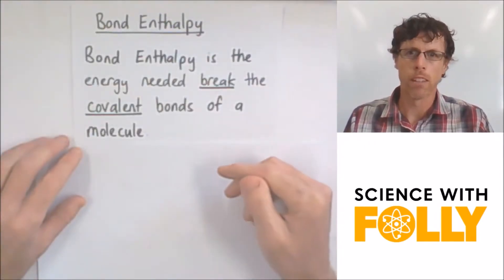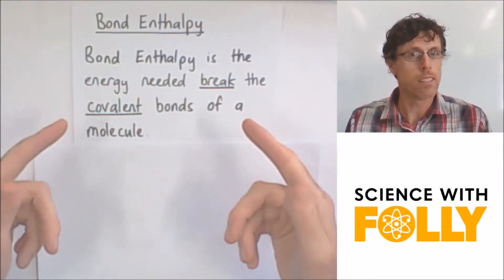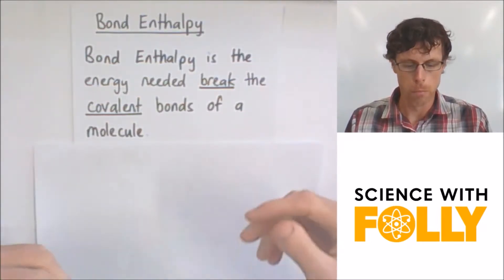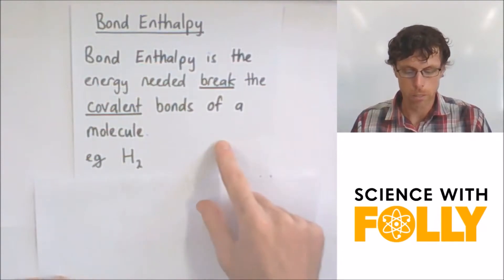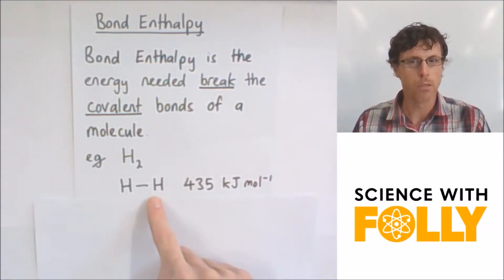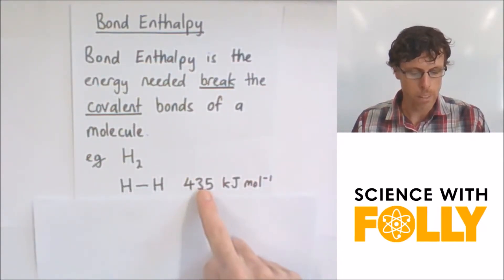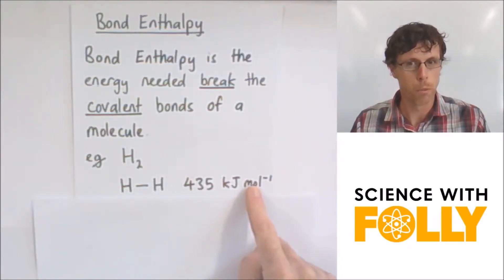So now let's look at bond enthalpy, and that's the energy needed to break the covalent bonds of a molecule. For example, if I've got a hydrogen molecule, there's one H to H bond, and that has a bond enthalpy of 435 kilojoules per mole.